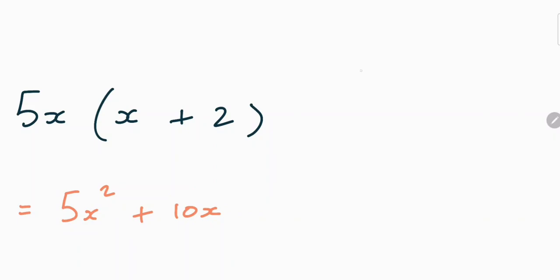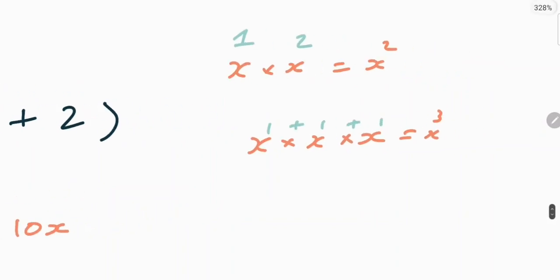Hopefully, you understand that when you're timesing by powers, you just add the powers. Another example is x times x times x. This would give us x cubed. Because essentially, it's x to the power 1, x to the power 1, x to the power 1. And we're adding these powers.